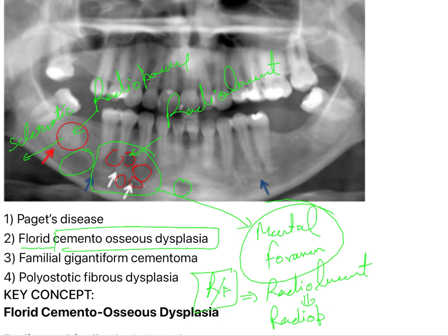There is a transition from radiolucency to radio-opacity. This is a 52-year-old patient who is not edentulous, so we can consider that she is still having a young lesion. Saying young patient would be incorrect, but the lesions here are young.